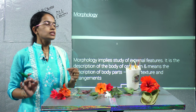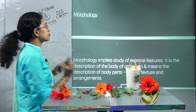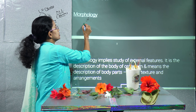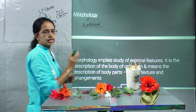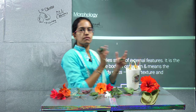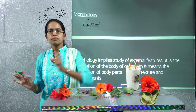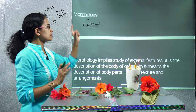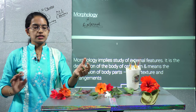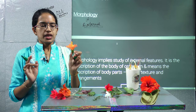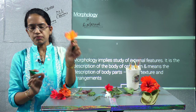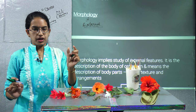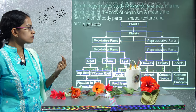The next thing we would focus on is morphology. Morphology is a very important term, and under morphology we try to understand only the external characteristics — the structure, the shape, and the texture. Within flowers or leaves we look at the arrangement. For example, in this flower each petal is separate, however in this flower all the petals are united. So the arrangement is different in both flowers, and therefore we understand arrangement as one of the major characteristics.